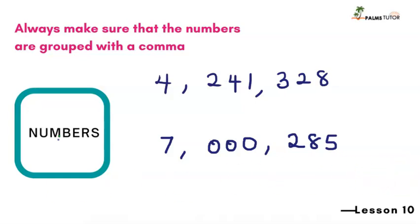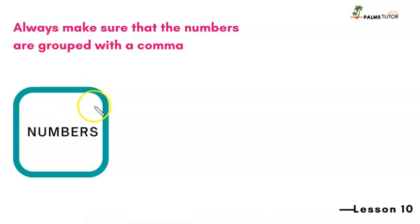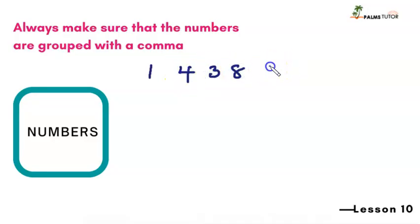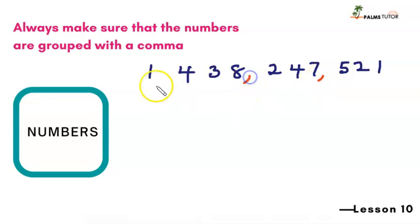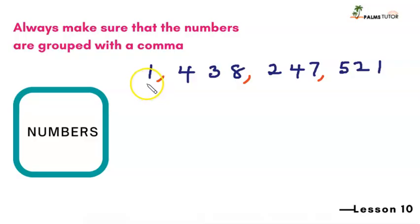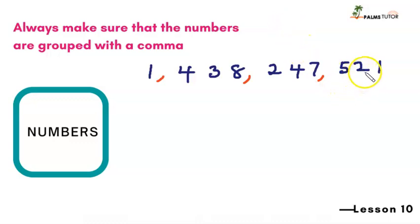Now let's go to the billions. We have 1,043,824,521 — I'll add the commas myself. One, two, three. You start from the back and place the commas. So we have hundreds, tens and units; then thousands; then millions; then billions. We have one billion, four hundred and thirty-eight million, two hundred and forty-seven thousand, five hundred and twenty-one.